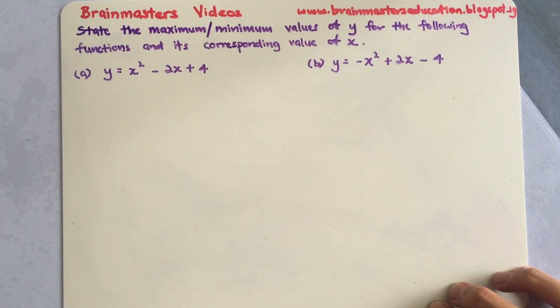This question usually appears after your quadratic equation finding nature of roots. They will usually ask you for the maximum or the minimum value, which also means the turning point.